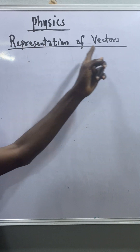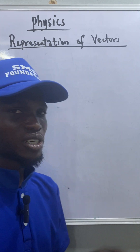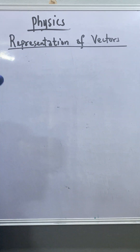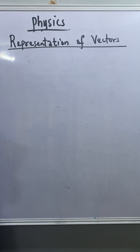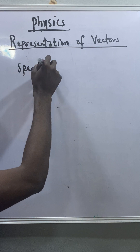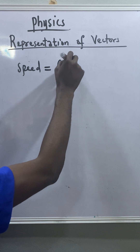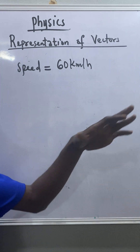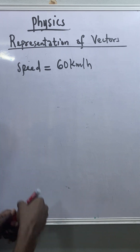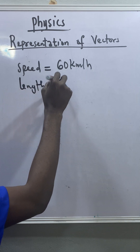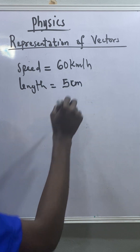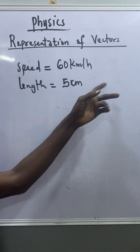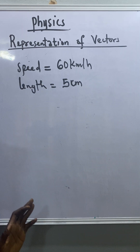Welcome to this class. This is a video on representation of vectors, but before I talk about that I want to talk about scalars first. How do we represent scalars? Scalars do not give us any problem — if you want to represent scalars, just write down the magnitude and attach a unit to it. For example, speed is a scalar. If the speed of a car is 60 kilometers per hour, we just write this magnitude and attach a unit to it. Similarly, the length of a book is five centimeters — we just write five centimeters, no direction attached to it.